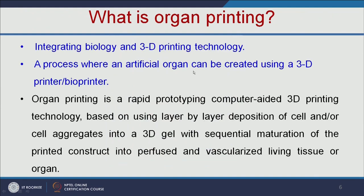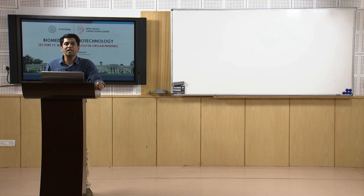Let us see what is organ printing. It is integrating biology and 3D printing technology. It is a process where an artificial organ can be created using a 3D printer or bio-printer. Organ printing is a rapid prototyping, computer-aided 3D printing technology. It is based on layer-by-layer deposition of cells on a 3D gel with sequential maturation of the printed construct into a perfused and vascularized living tissue or organ. Here we are going to use biological cells as ink, and we will print the organ in a 3D environment.